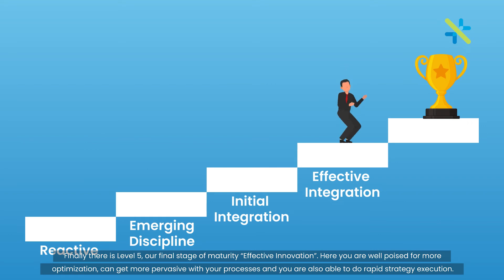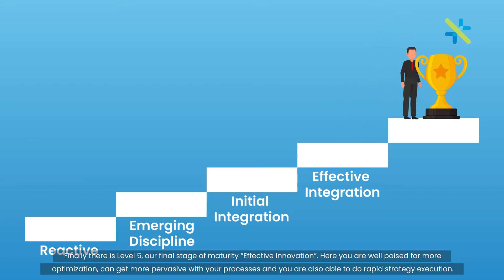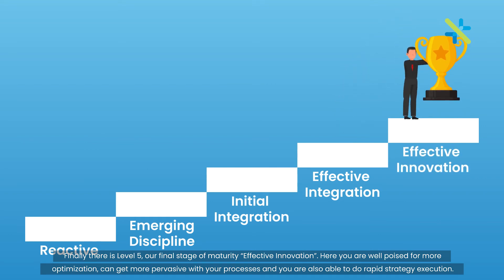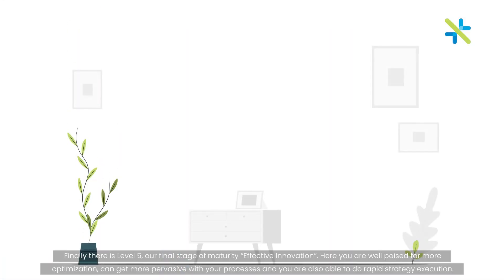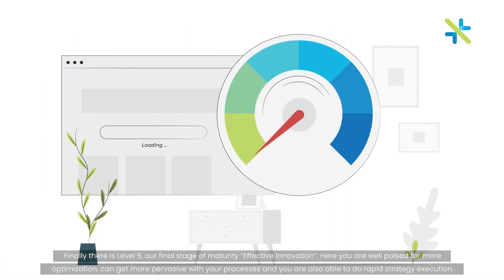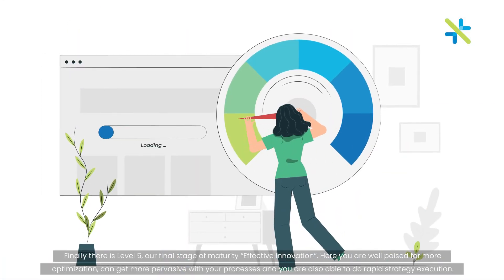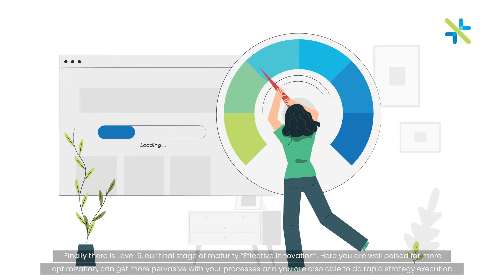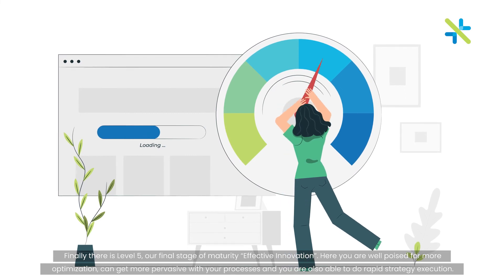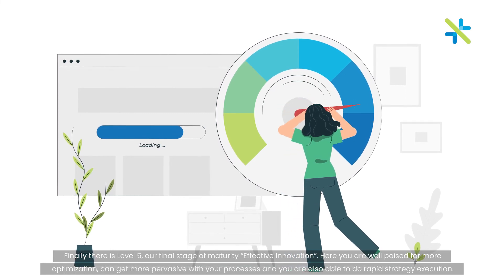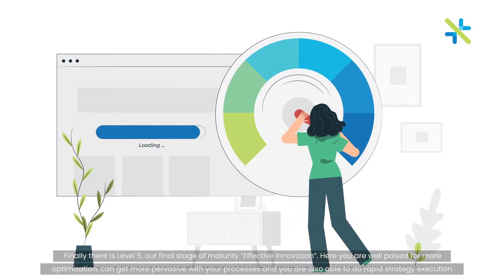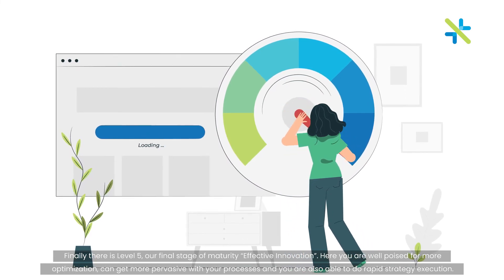Level 5 is our final stage of maturity: effective innovation. Here you are well poised for more optimization, can get more pervasive with your processes, and you are also able to do rapid strategy execution.